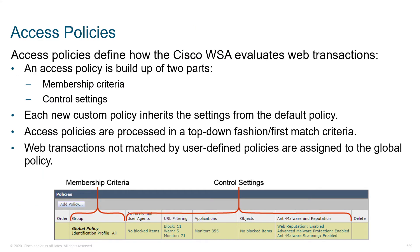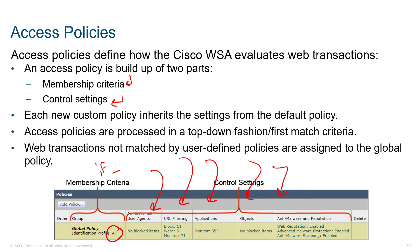The access policy defines how the WSA evaluates web transactions. The policy is built up of two parts: the membership criteria and the control settings. The membership criteria is kind of like an if condition — who does it apply to? What protocols and user agents? What's going on with URL filtering, applications, objects, and anti-malware and reputation filtering? We can build different policies for each of those columns, and those policies apply to the users we identify in the membership criteria.